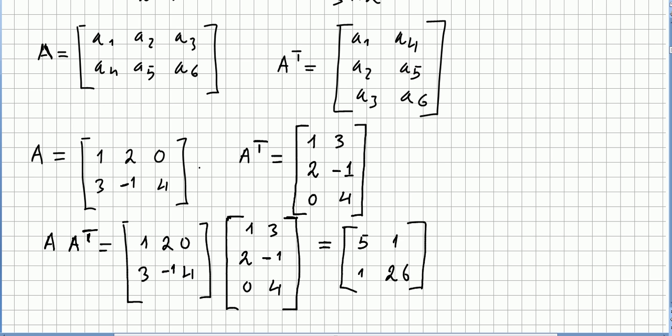So a quick example is, for instance, if you have matrix A: 1, 2, 0, 3, minus 1, 4, and its transpose is 1, 3, 2, minus 1, 0, 4.